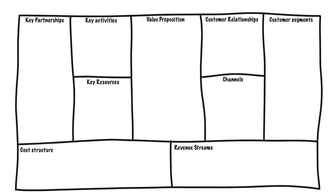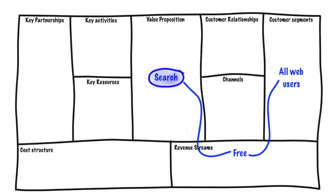Remember the blank Business Model Canvas — the nine aspects that Osterwalder et al says we should think about when we think about the operations of a business. Core in the Business Model Canvas is the value proposition. If you think about what is the value proposition for Google, you are probably going to be right: Search. Who are the customer segments that use search? Well, virtually all web users have a need for search. But of course, the revenue stream is non-existent because search is free to all web users.